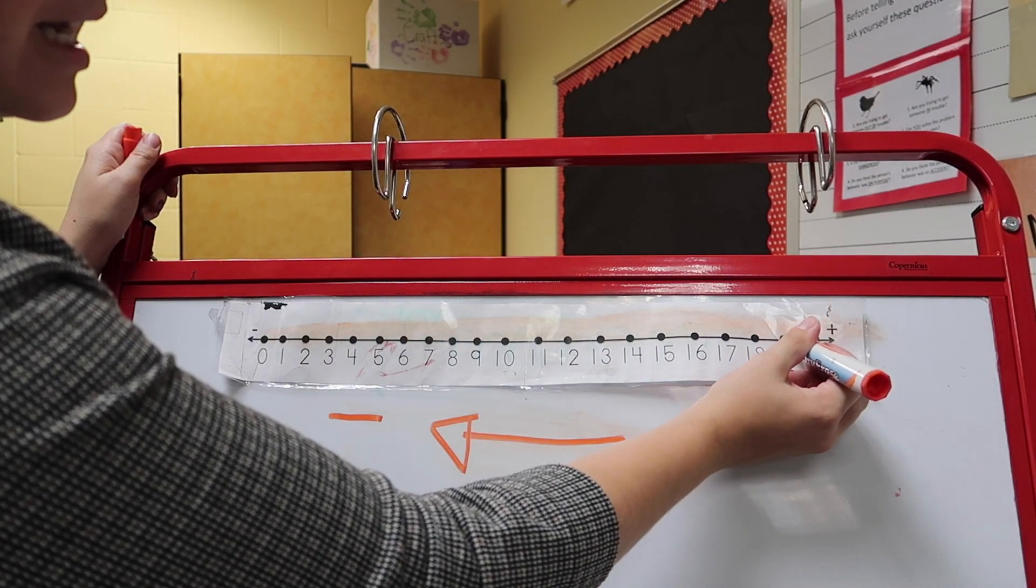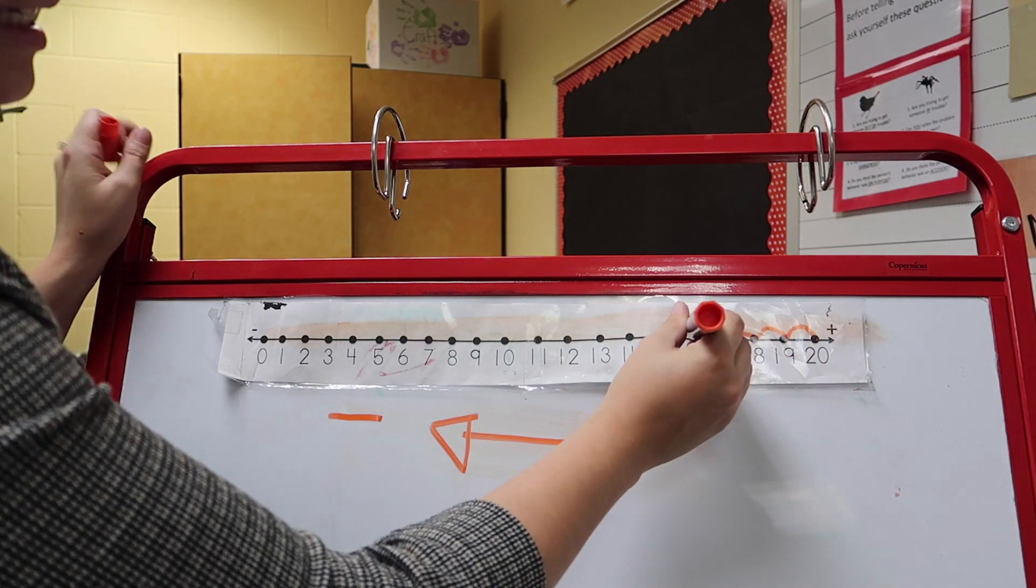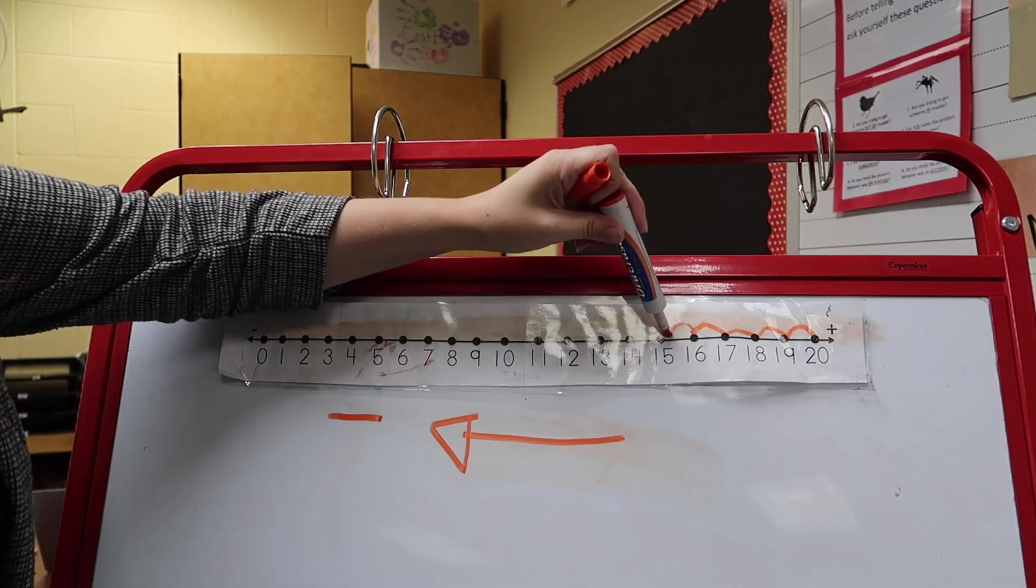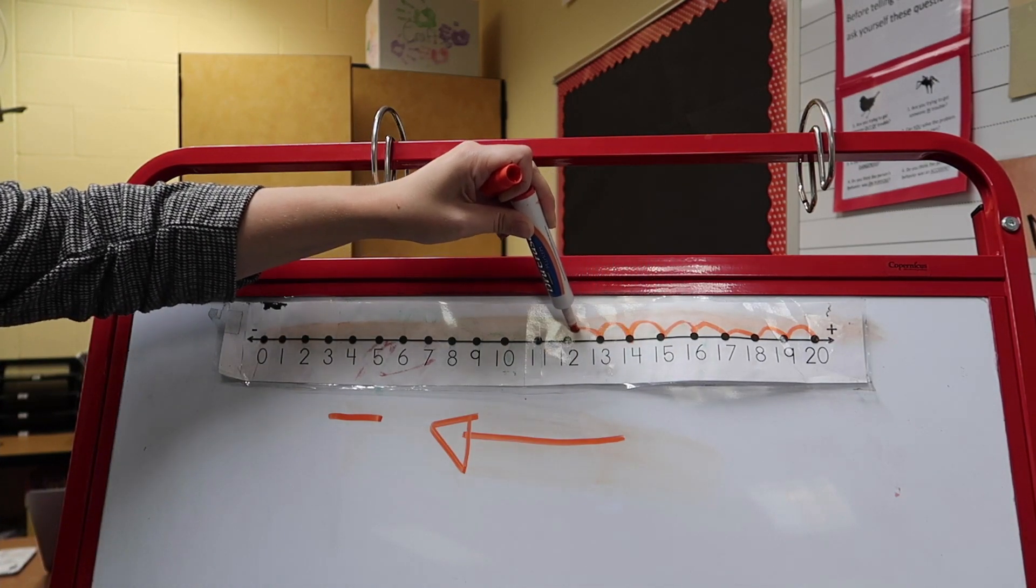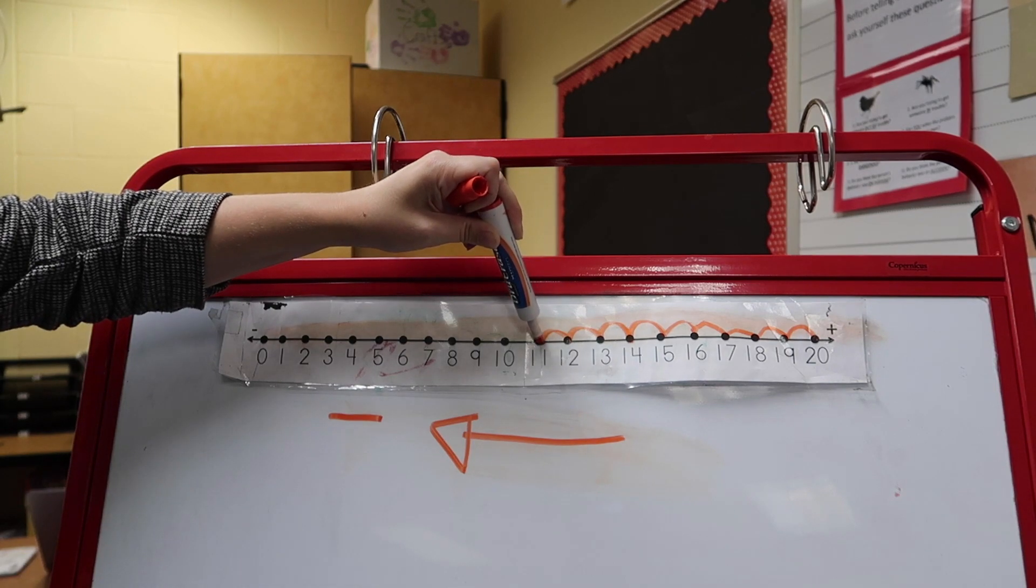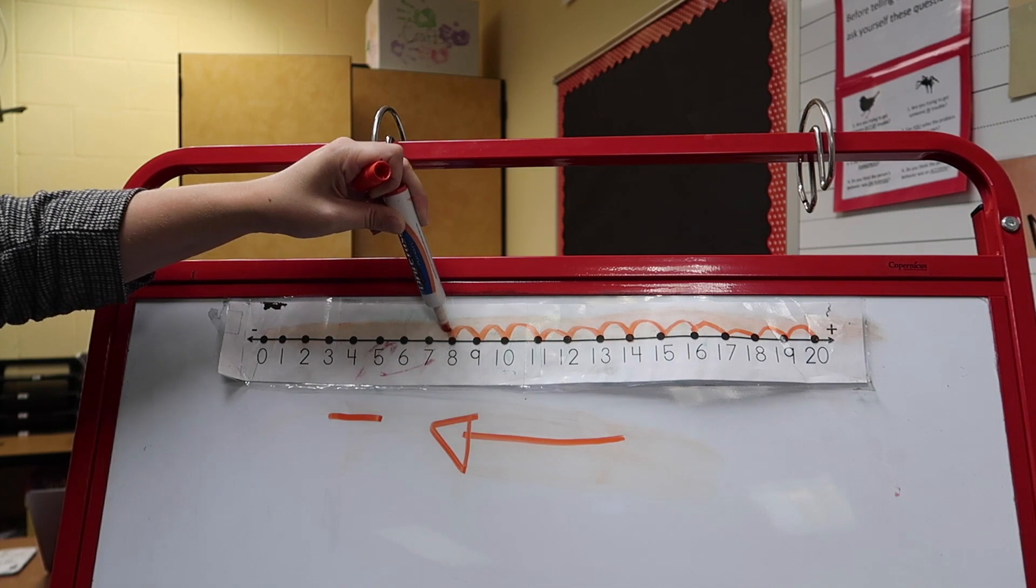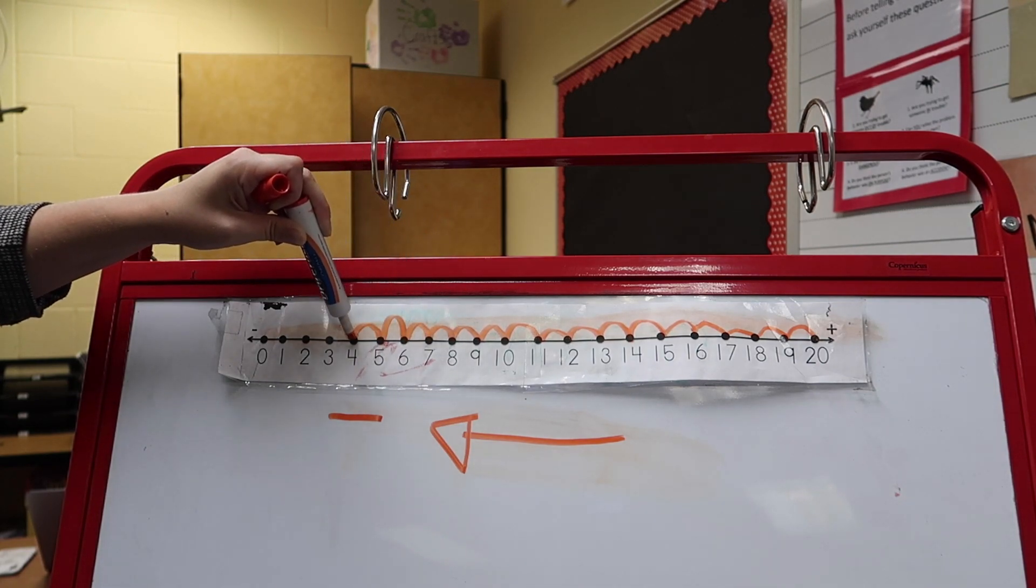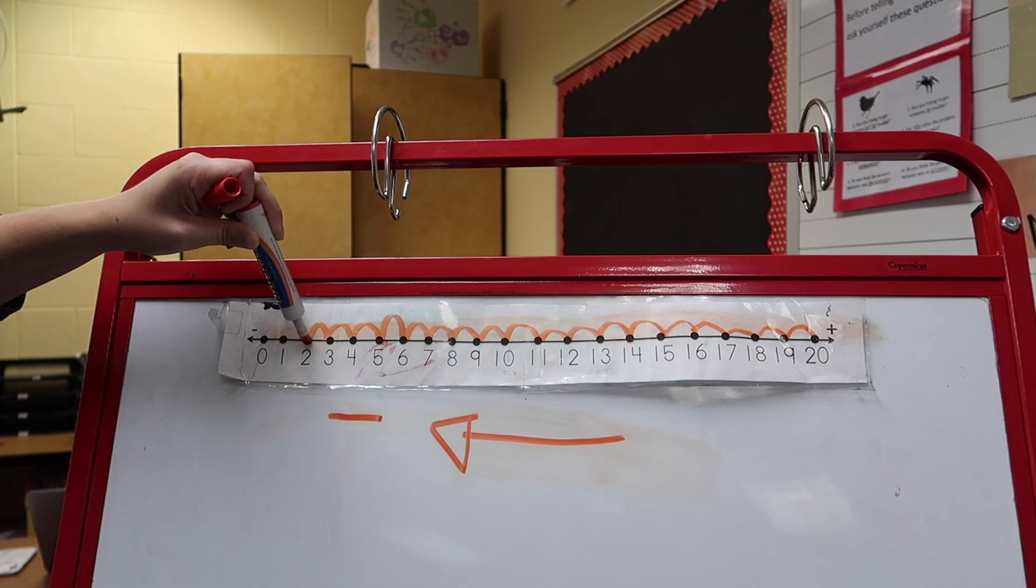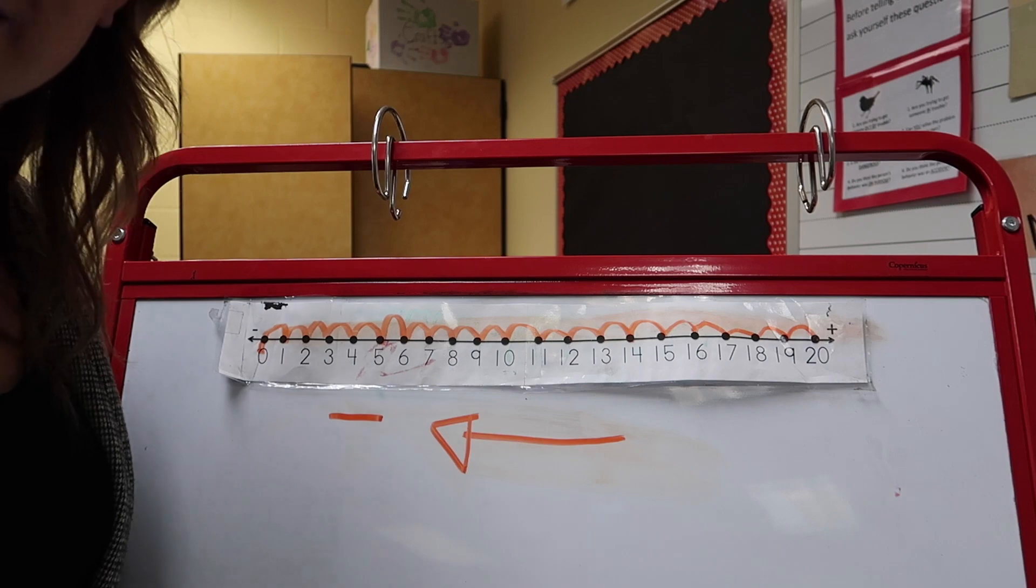Twenty, jump nineteen, jump eighteen, jump seventeen, jump sixteen, jump fifteen, jump fourteen, jump thirteen, jump twelve, jump eleven, jump ten, jump nine, jump eight, jump seven, jump six, jump five, jump four, jump three, jump two, jump one, jump zero. That's as far down as we can go.